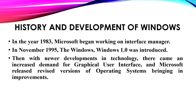History and development of Windows: In the year 1983, Microsoft began working on Interface Manager. In November 1985, Windows 1.0 was introduced. Then with newer developments in technology, there came an increased demand for graphical user interface and Microsoft released revised versions of operating systems, bringing in improvements.